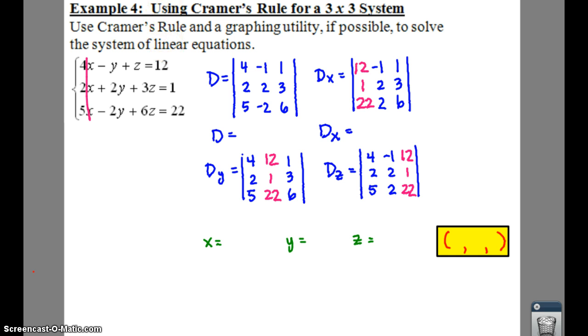So then, if you find your determinants, remember, you can use a calculator to find these if you don't want to do them by hand, which, if you have a 3 by 3, I would recommend. And when you do that, D ends up being 55.